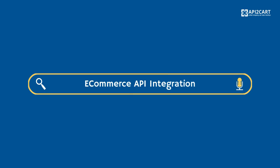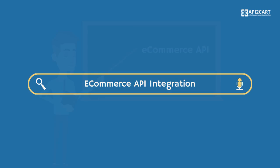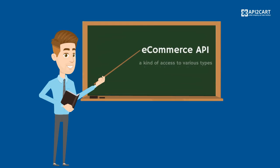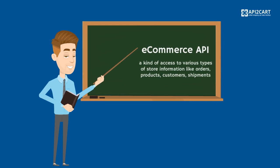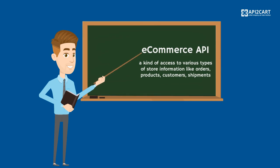E-commerce API integration is what allows e-commerce software to connect to shopping platforms and manage the data from stores. An e-commerce API acts as a kind of access to various types of store information like orders, products, customers, shipments, and others.